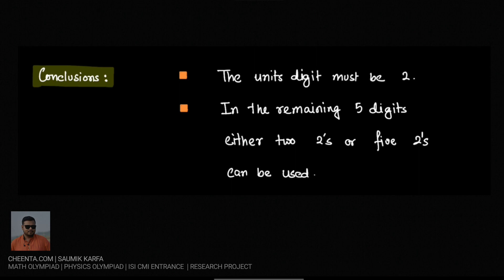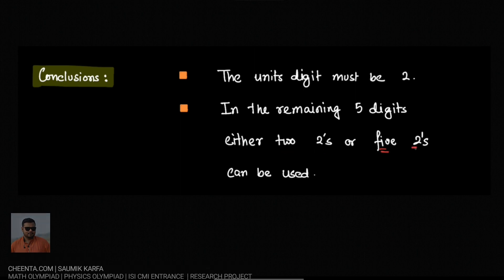So when we will be adding all these 6 digits, there should be either three 2s or six 2s. Otherwise the number will not be divisible by 3. As the unit digit is already fixed as 2, in the remaining 5 digits there should be either two 2s or five 2s.